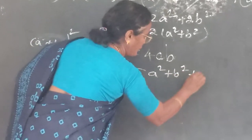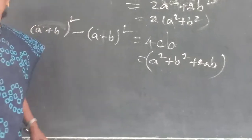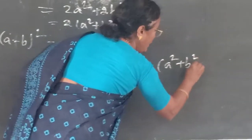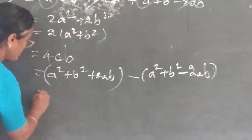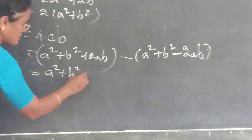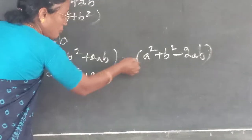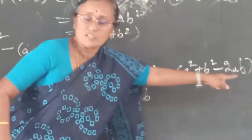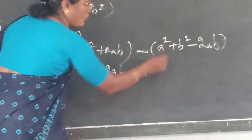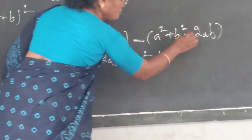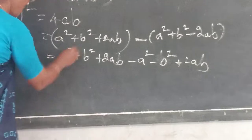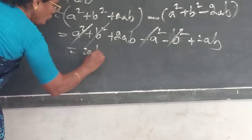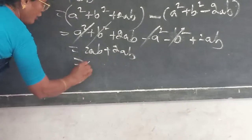(a + b)² gives a² + b² + 2ab. But you put a bracket because of the minus sign — minus minus becomes plus. So minus (a - b)² gives minus a² minus b² plus 2ab. Here there is no change for the first part: a² + b² + 2ab. Then minus a², minus b², plus 2ab. How many 2ab terms? 4ab in total. So the answer is 4ab.